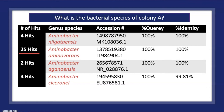The BLAST results for colony A's closest relatives show the genus Aminobacter consistently throughout: Aminobacter niagotiensis, Aminobacter amnivoran, Aminobacter agonesis, and Aminobacter cicerone. The key metric is the percent query coverage, which shows how closely the nucleotide sequences match — all were at 100%. The number of hits determined which specific species to research further, and Aminobacter amnivoran had the most hits, so that is where I focused my research.